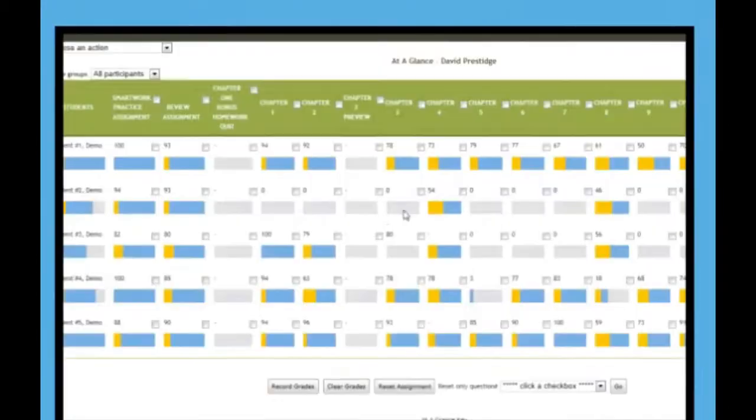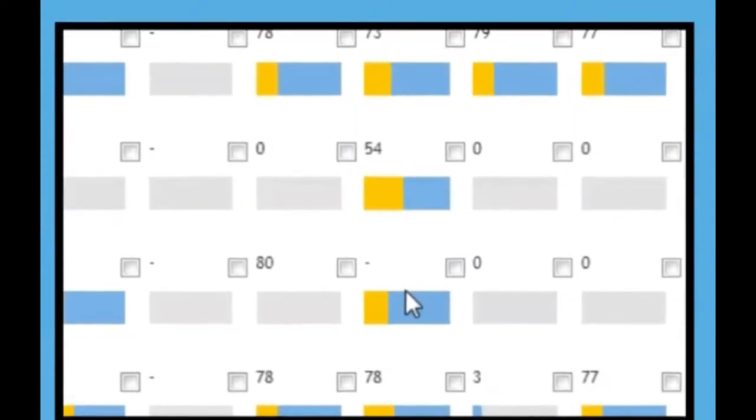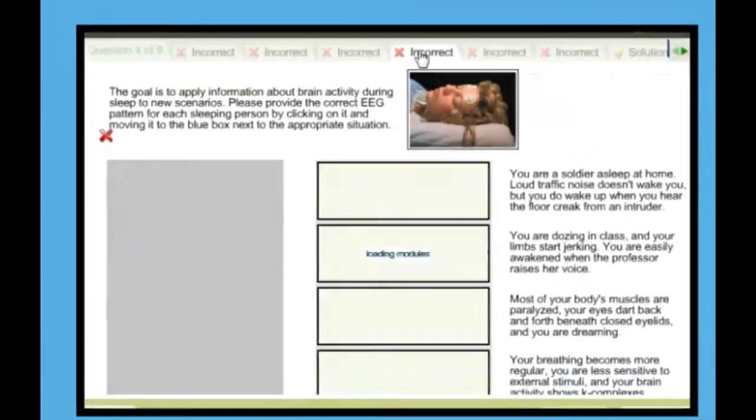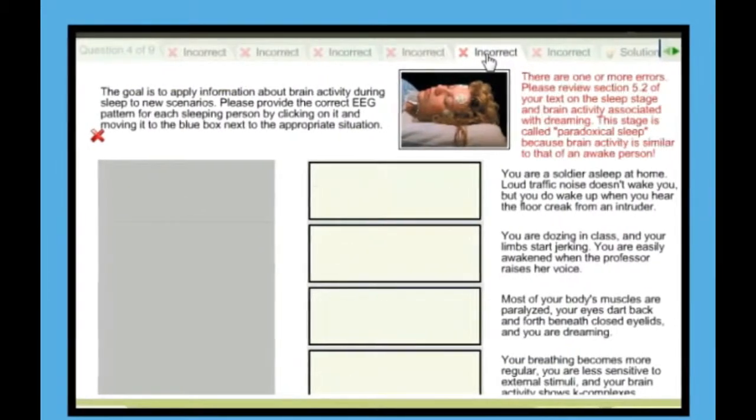SmartWork's at-a-glance grade book shows how the class is doing and where they're struggling, and SmartWork keeps record of individual student performance, so you can see exactly where a student went wrong and how they got there.